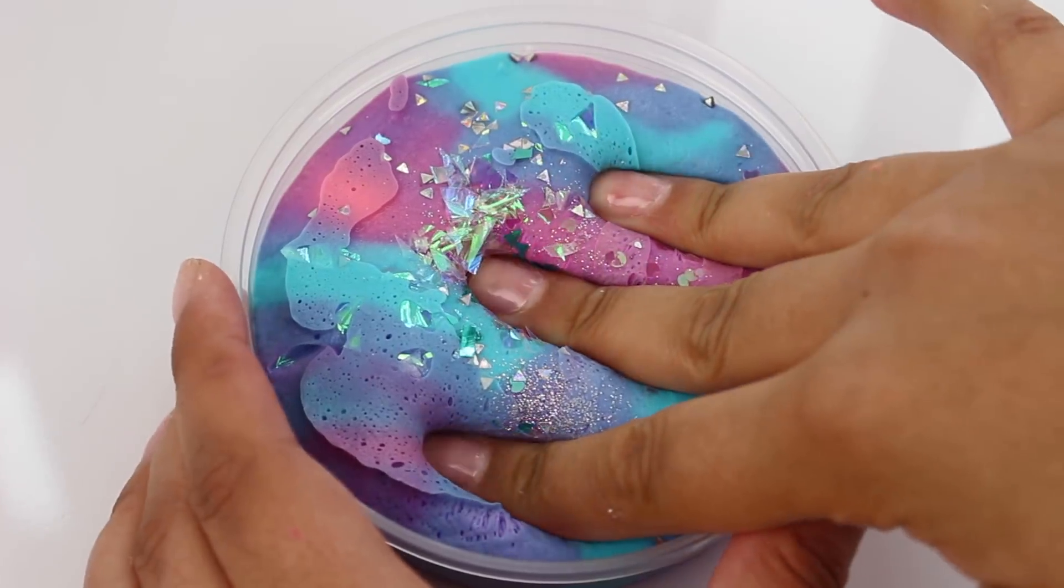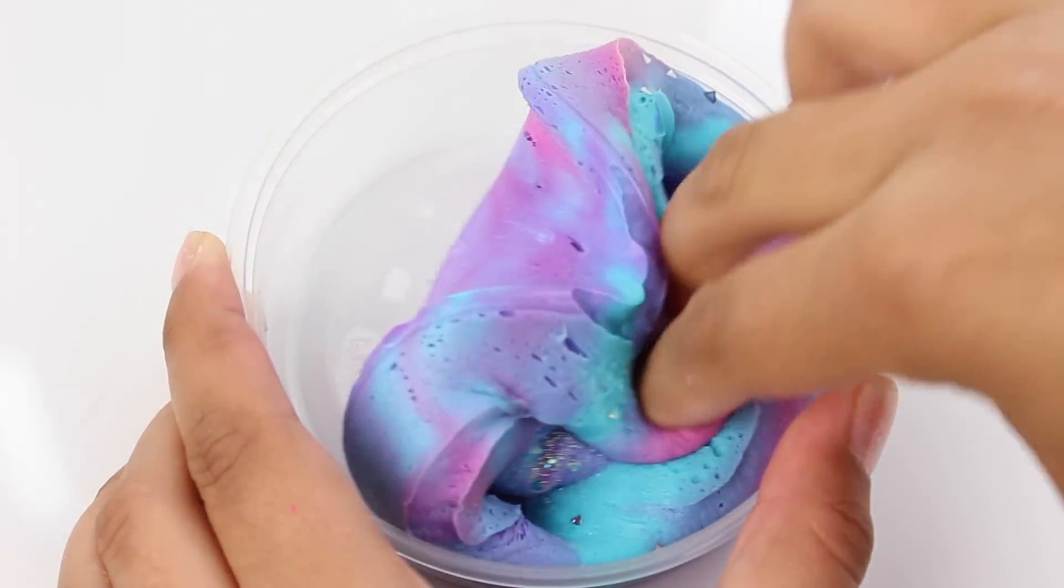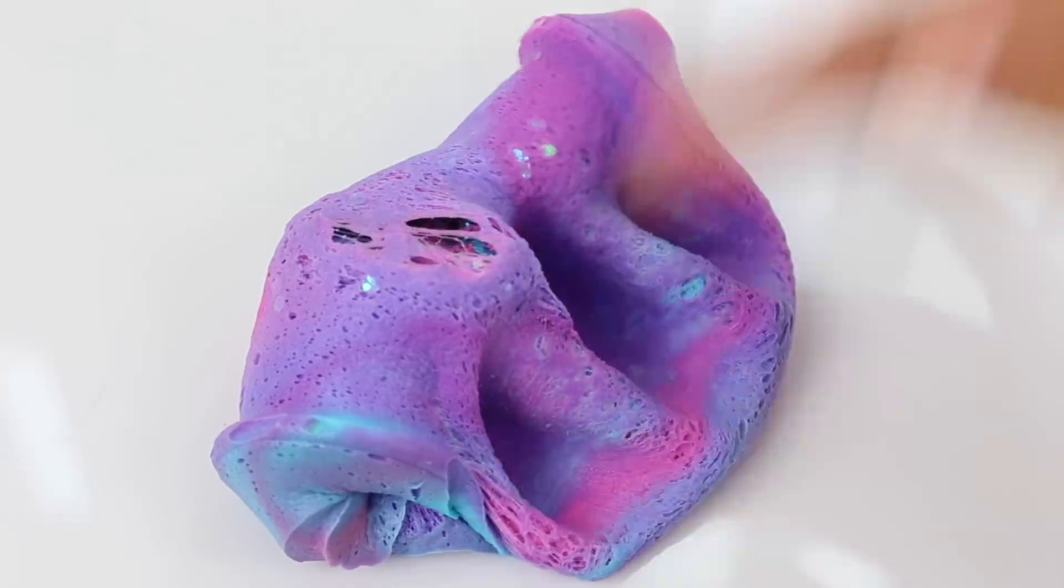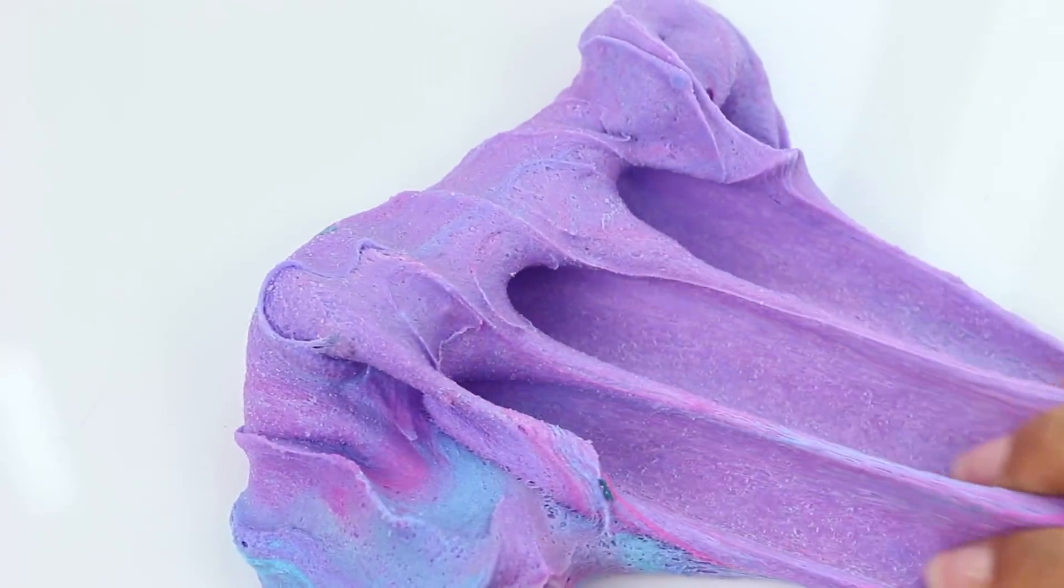Unicorn party is another slime that I can never forget for a restock. This one is pink, purple, and blue swirled together with various glitter including some heart glitters, holographic glitter, unicorn skins, and I think that's it. It's scented like bubble gum. It smells really good and you guys seem to really like it.